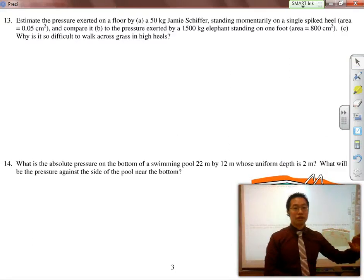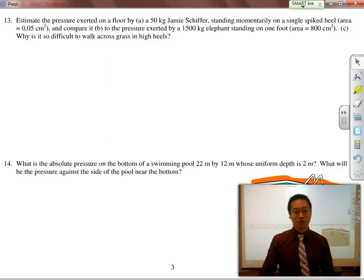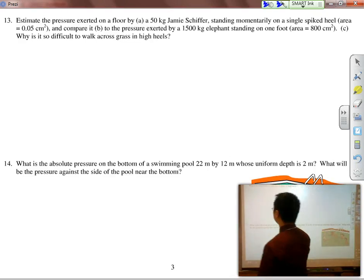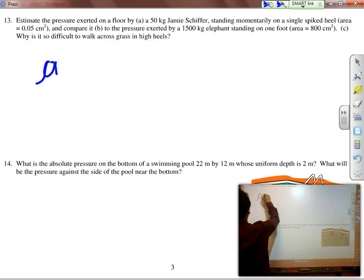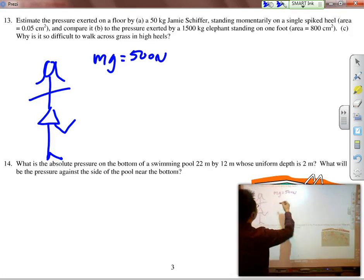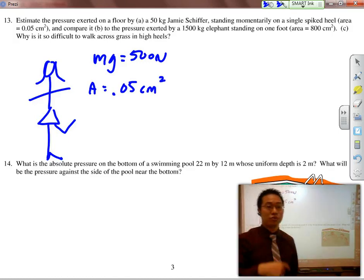But over an entire bed of nails where there's lots of them and lots more surface area, the force is evenly distributed. So therefore, there's a lot less pressure. If we actually take a look at this problem, estimate the pressure exerted on the floor by a 50-kilogram Jamie Schiffer, who's standing momentarily on a single spiked heel, and compare it to the pressure exerted by a 1,500-kilogram elephant. First of all, I gave you Jamie Schiffer and her weight, and she's standing on one foot. Her weight is 500 newtons. The area was given as 0.05 centimeters squared.